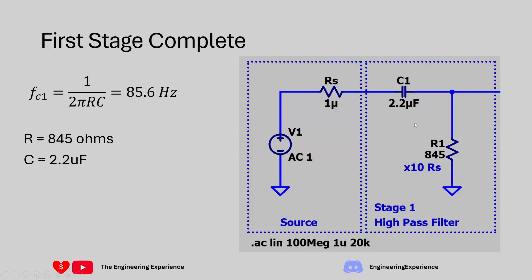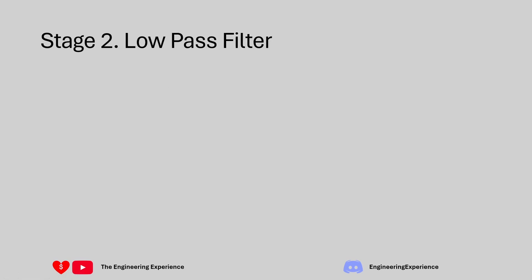The first stage is complete and we can populate these component values. We've got a 2.2 µF capacitor with a resistor of 845 Ω, giving us a cutoff frequency of 85.6 Hz. Now let's move on to the second stage, the low pass filter segment. This filter segment will attenuate any frequencies above fc2, which was the second cutoff frequency.